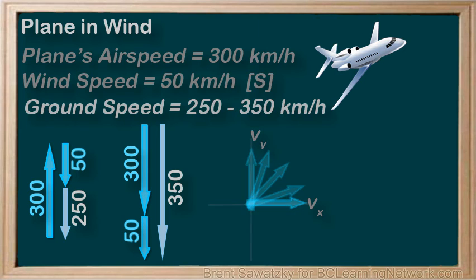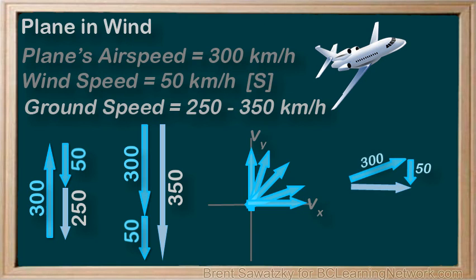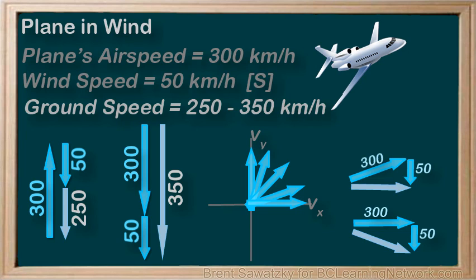It's worth sorting these out as any other direction the plane aims will result in a ground speed between these two values. The direction you choose to aim your plane depends on your ultimate goal. Often, the goal is to fly to a particular location — you'd set up a vector diagram where the resultant velocity is aimed directly at your target. It may not be the fastest speed to get there, but it will lead you in the most direct route. If your goal is more about speed — say you wanted to head east as fast as possible — then you design a route where your easterly component of velocity, Vx, is a maximum.